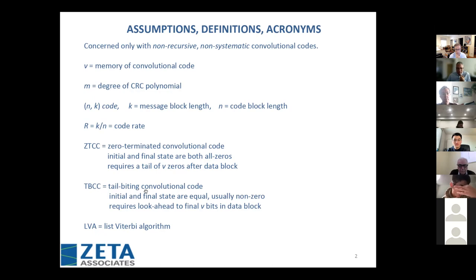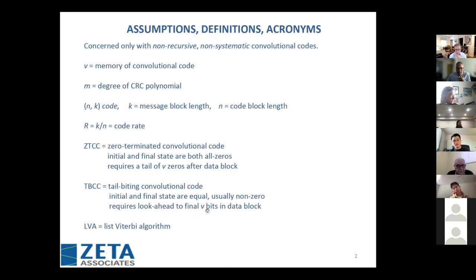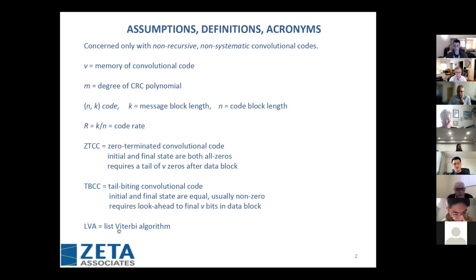That tail is the overhead we'd like to avoid for short message blocks. TBCC is tail-biting convolutional code, meaning the initial and final state are equal — usually non-zero — requiring a look-ahead to the final V bits in the data block to match the initial state to the final state. And LVA is the list Viterbi algorithm.